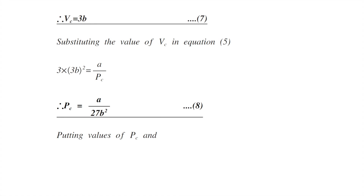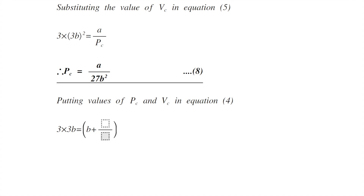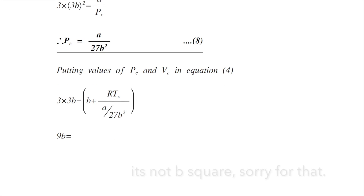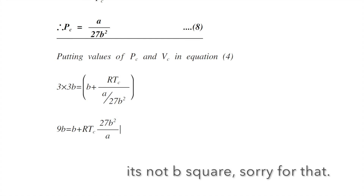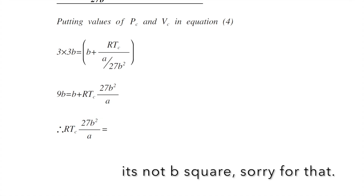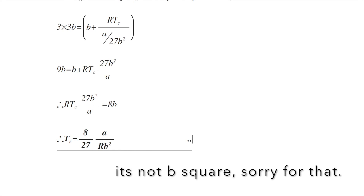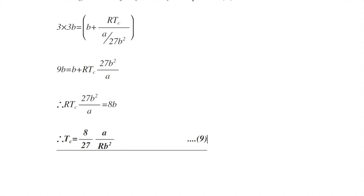Putting the values of Pc and Vc into equation 4, we get 3(3b) = b + RTc / (a/27b²). Simplifying, 9b = b + RTc·(27b²/a), so RTc = (8b·a)/(27b²), giving Tc = 8a/(27Rb). This is the formula for critical temperature in terms of a and b. That's all, thank you.